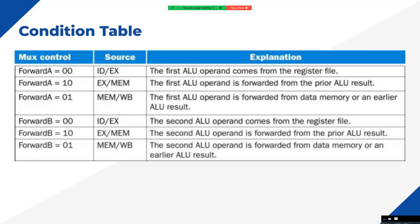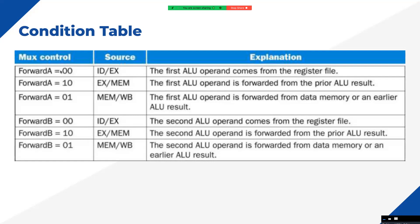If there is no forwarding needed because conditions are not matching and no data hazard has occurred, I want normal operation, so the control signal generated is 2'b00, indicating the operand comes from the decode stage in normal operation. If there is a data hazard coming from the memory stage, I generate a control signal of 2'b10, selecting the ALU result from the memory stage. If the data hazard comes from the writeback stage — possible when data dependency is more than one instruction away — the control signal generated is 2'b01. We have only three conditions: 00, 01, and 10; the 11 state is not used.